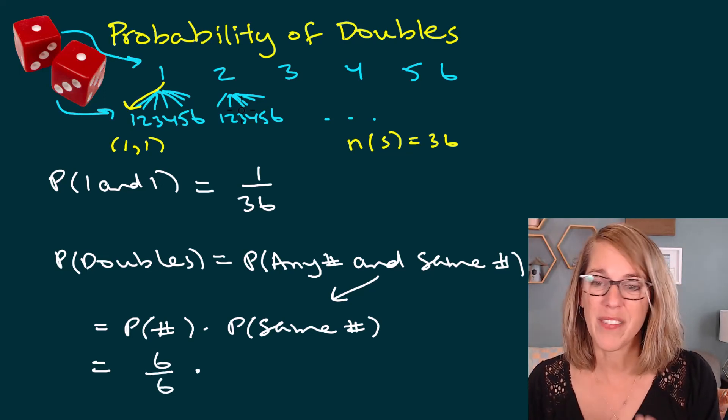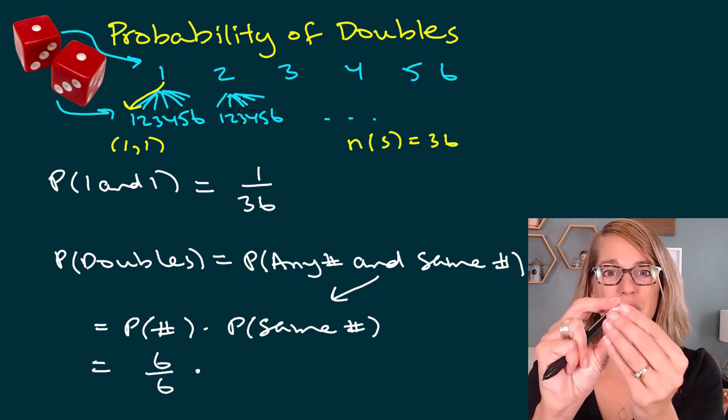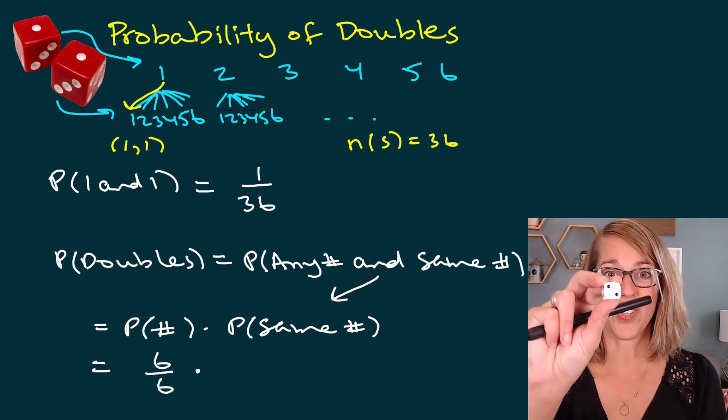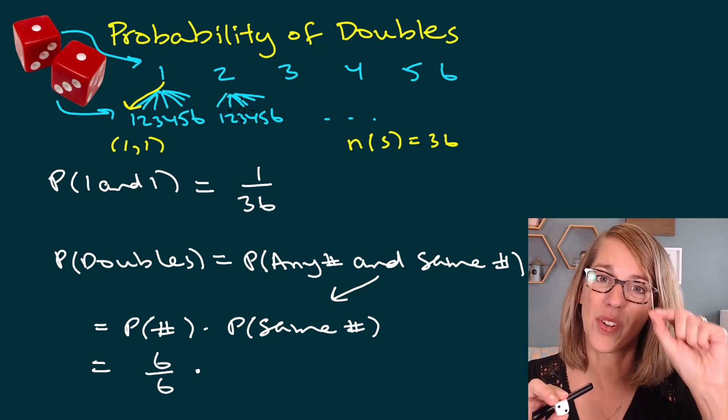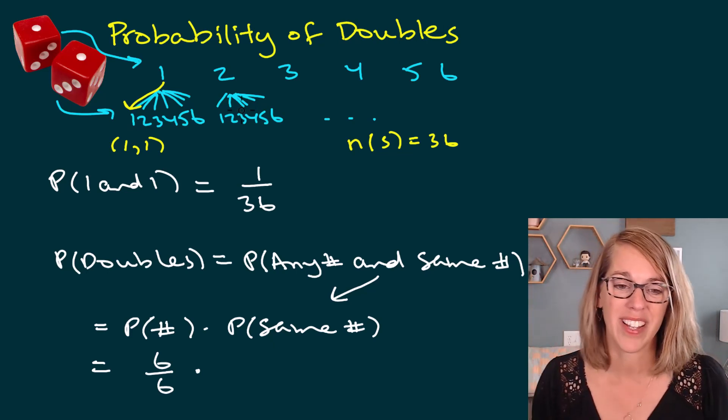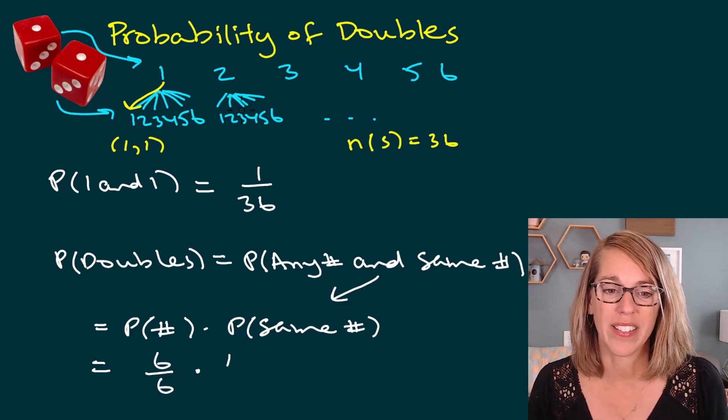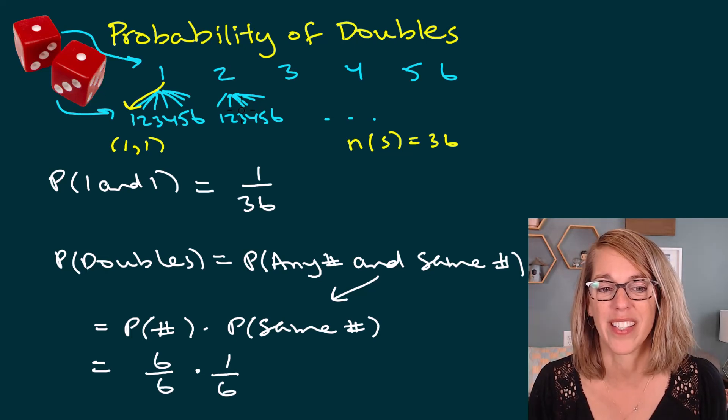Times the probability of getting the same number. So if I roll this first dice and it lands on two, that means the second number has to be a two, and there's only one way to match it. So there's only one way to get the same number on that second dice.